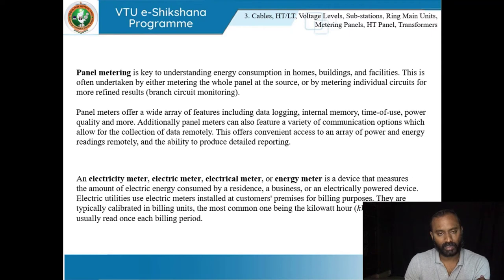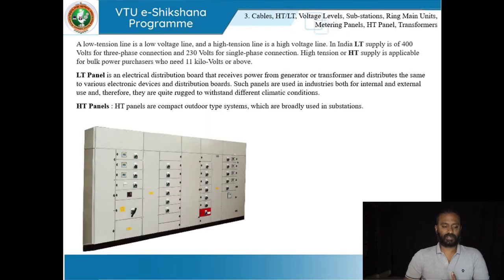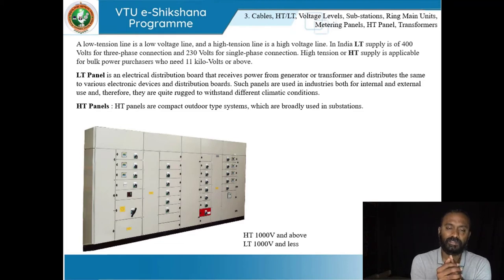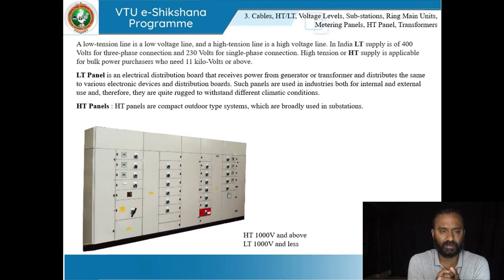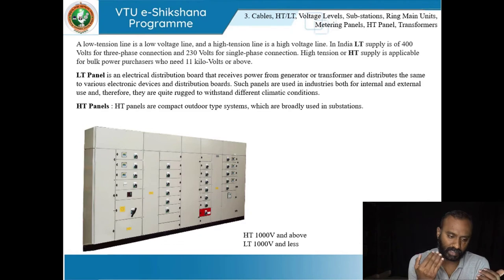Energy is usually measured in kilowatt-hours, and meters are read once in each billing period. An LT panel handles low voltage — single phase 230 volts or three phase 400 volts. High tension panels are applicable for bulk purchasers needing several kilovolts or above, such as industries. A panel typically looks like a box, and depending upon the capacity it handles it is called an LT panel or HT panel.